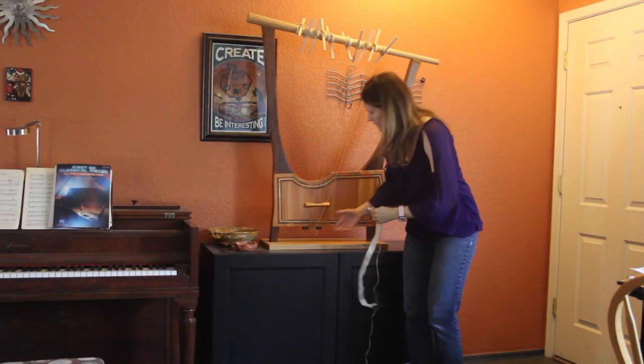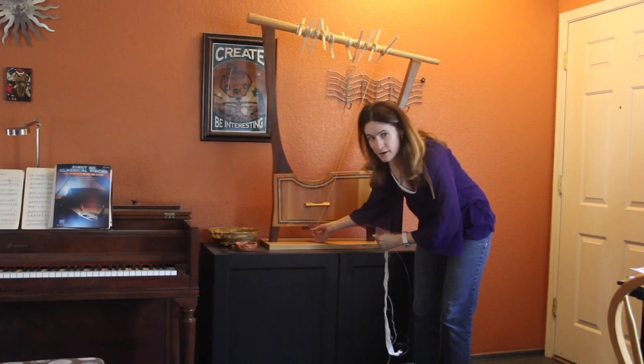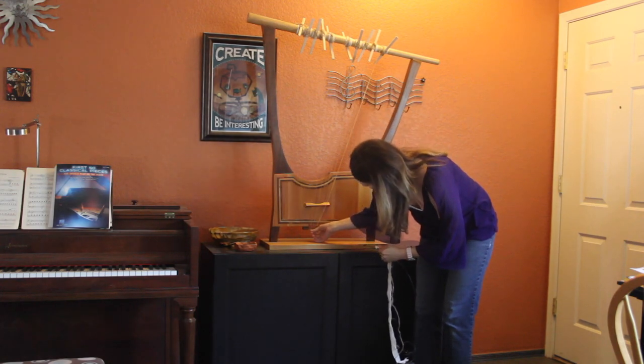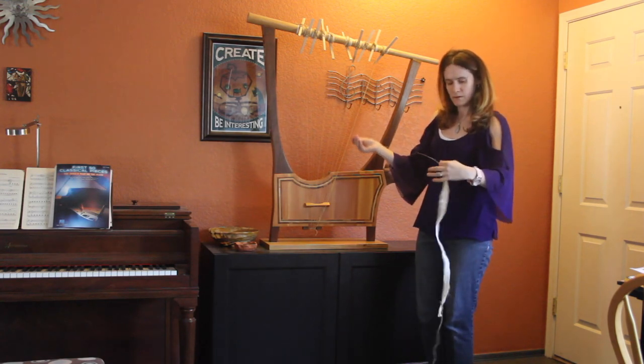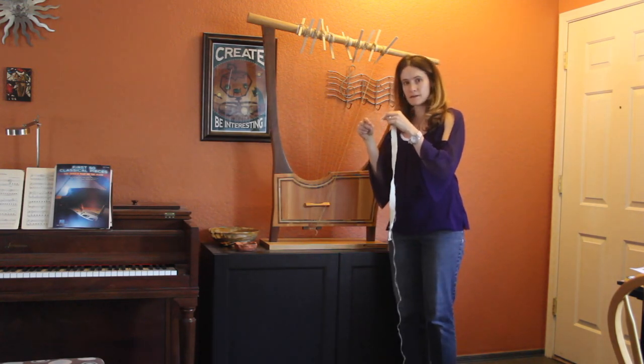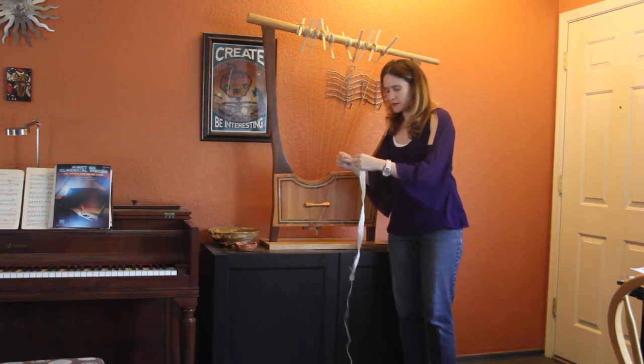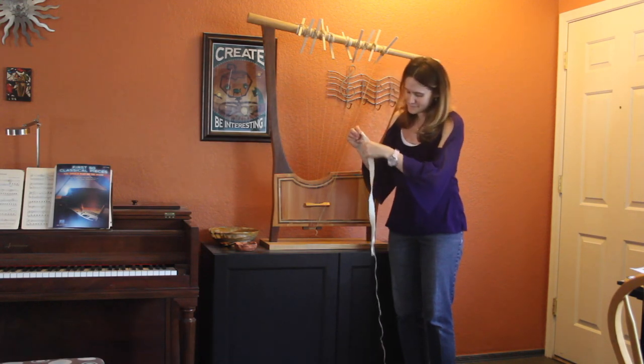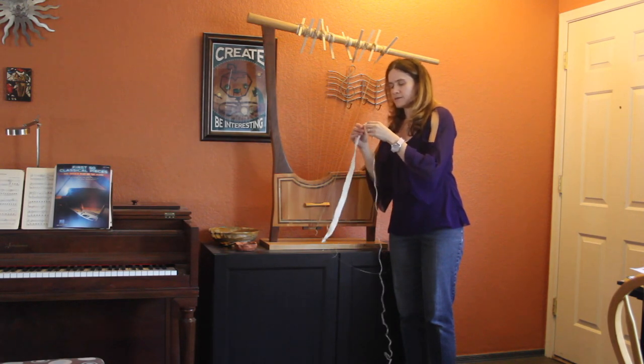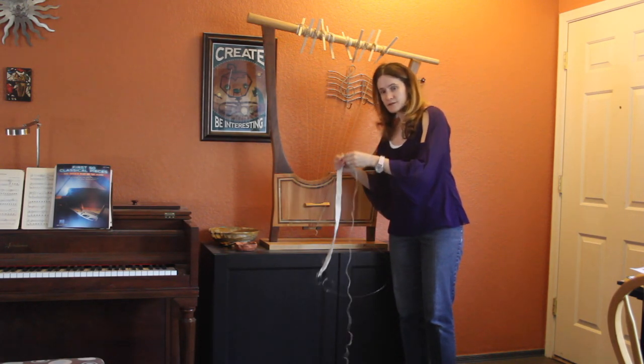So to review. We have one end of the harp gut string attached to the anchor bar. We have the other end of the gut harp string attached to one end of the cloth strip. We have the other end of the cloth strip connected to the twine.